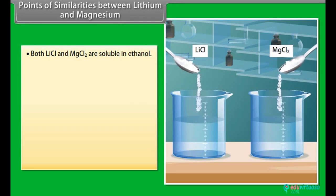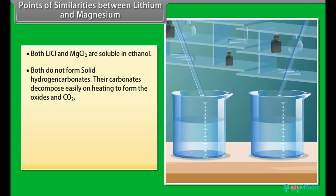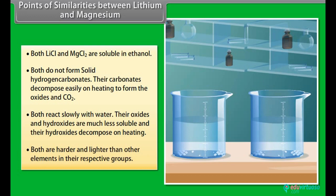Points of similarities between lithium and magnesium: Both LiCl and MgCl2 are soluble in ethanol. Both do not form solid hydrogen carbonates. Their carbonates decompose easily on heating to form the oxides and CO2. Both react slowly with water. Their oxides and hydroxides are much less soluble and the hydroxides decompose on heating. Both are harder and lighter than other elements in their respective groups.